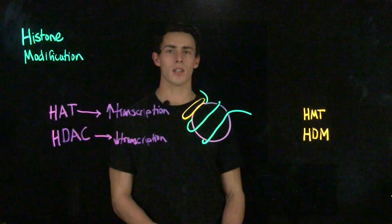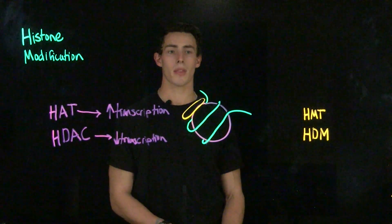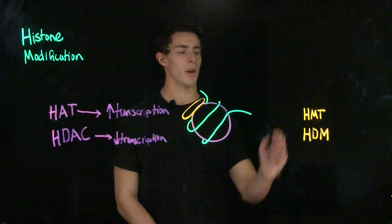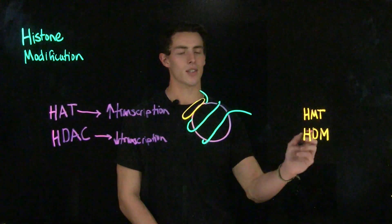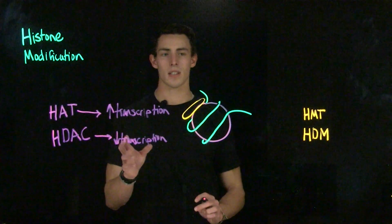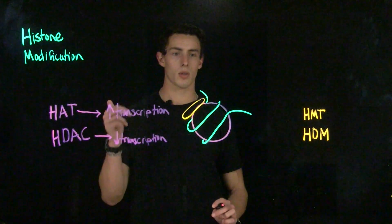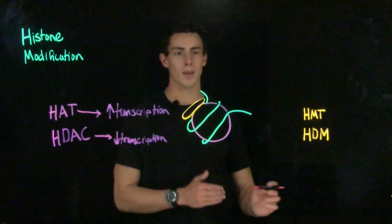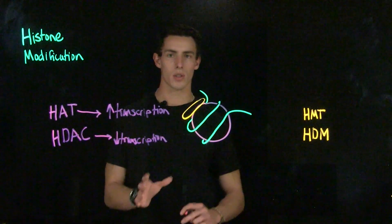In addition to histone acetylation and deacetylation for gene regulation, we can also do histone methylation. The enzymes responsible for histone methylation and demethylation are HMT, or histone methyltransferase, and HDM, or histone demethylase. Now, unlike histone acetylation — where it's pretty predictable that if we acetylate we increase transcription, or if we deacetylate we decrease transcription — with histone methylation or demethylation, it depends. It depends on the gene and it depends on the region of the chromatin.